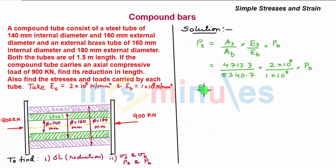So PS, the load on steel, comes out to be 1.76 times the load on brass tube PB. Let this be equation 2.